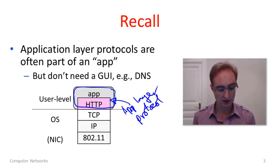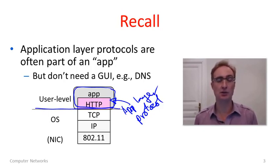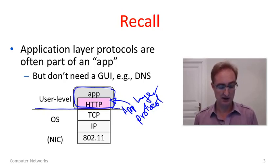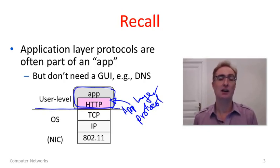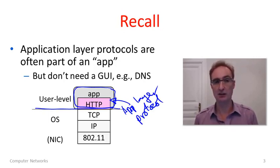I've also drawn lines just to remind you of where this functionality is typically implemented in systems today. The application including the application layer protocol usually runs at user level on traditional operating systems. In the operating system we have TCP/IP and everything below the application level, down to some of the lowest layers — the link and physical layer — which can be implemented as part of the NIC, the network interface card, in hardware.